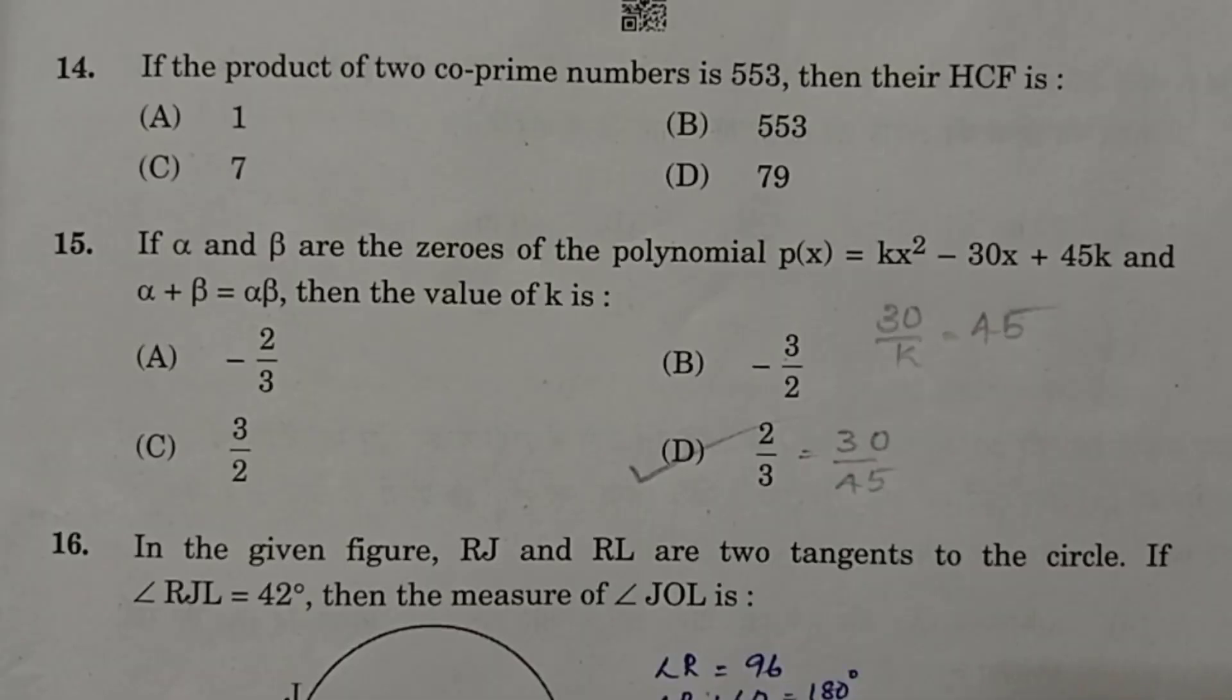Question 14. The product of 2 co-prime numbers is 553, then their HCF. Since the 2 numbers are co-prime, their HCF is 1.